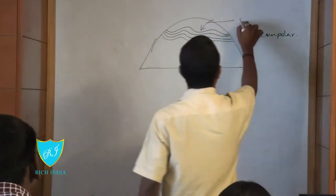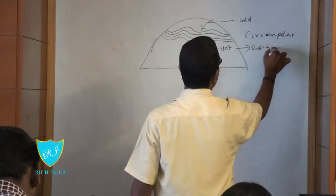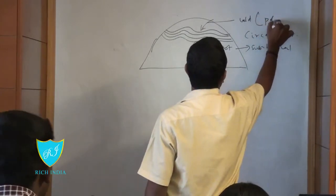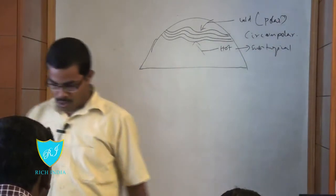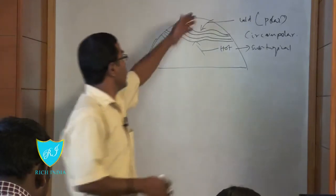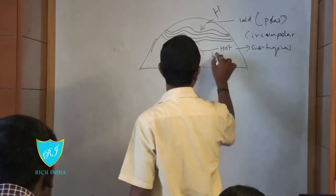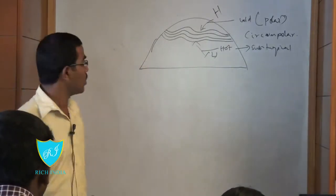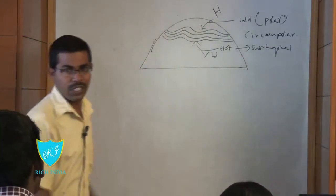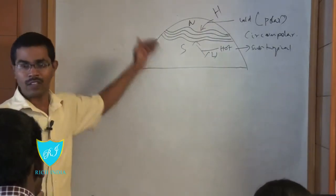The upper side has cold polar air masses while the lower side has hot subtropical air masses. The pressure gradient between them runs north to south in the initial state, with this region being high pressure and the other being low pressure.